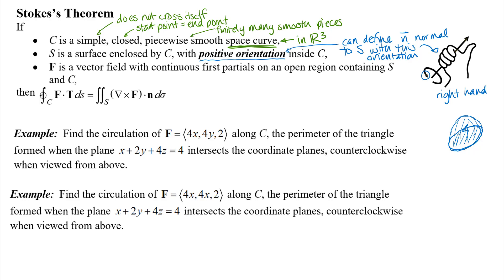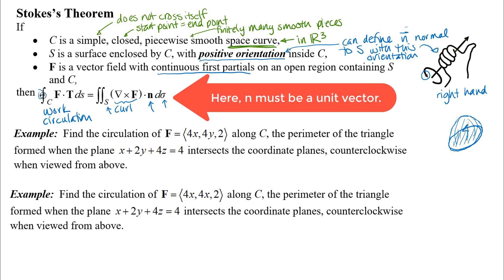F is a vector field with continuous first partials on an open region containing S and C. Making sure that our vector field F has continuous first partial derivatives on our region is the big deal there. The left side of this integral is a work or circulation integral — the circulation around C, notice the counterclockwise orientation on the arrow, is equal to the surface integral over S of the curl vector dot n, where n is that normal vector to the surface defined with that right-hand orientation.